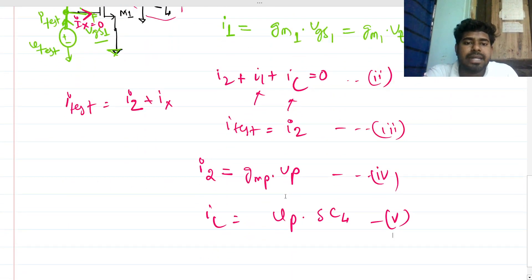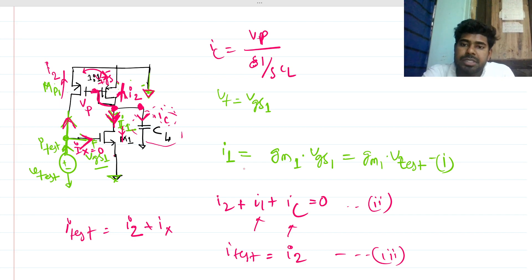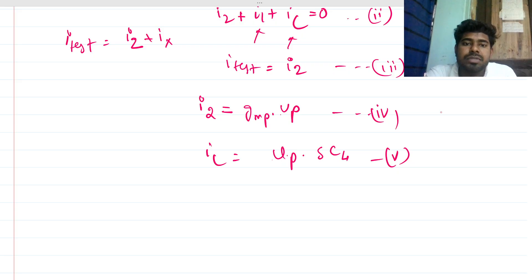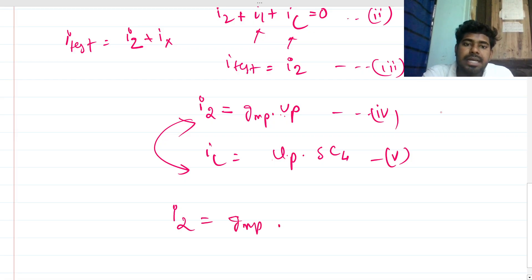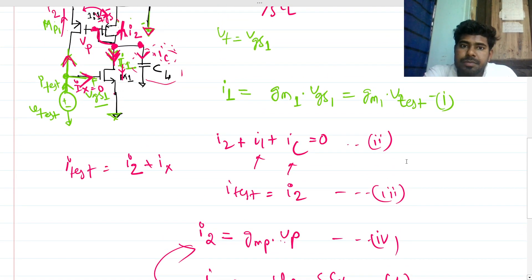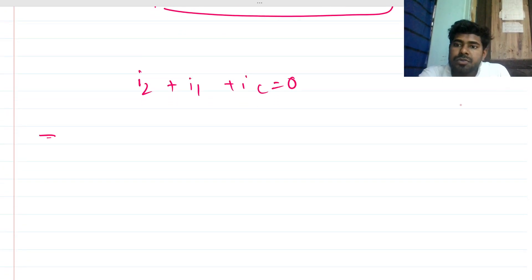It may seem like many equations, but intuitively all current must flow through these branches. From equations four and five we get I2 = gmp times V_p = I_c / (sCL), which gives us another key relation. Now substituting into equation two: I2 + I_on + I_c = 0, where I2 = I_test.